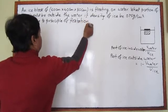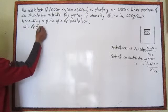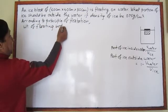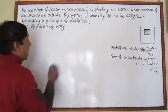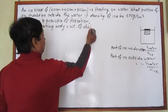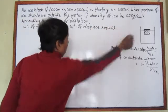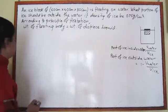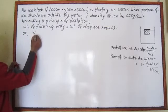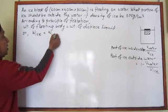According to the principle of floatation, the weight of the floating body — in our case, the weight of ice — is equal to the weight of the displaced liquid — in our case, the weight of the displaced water. We can use this equation for every floating body.